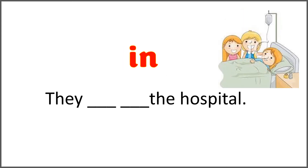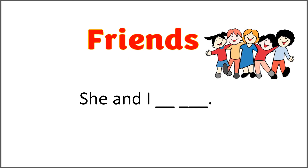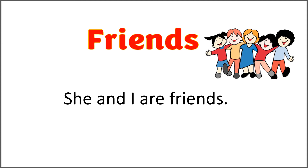The given word is 'in' and the sentence is 'they blank blank the hospital.' Use 'in' with 'are' to complete the sentence. The correct answer is: they are in the hospital. But why are they looking so happy in the hospital? The given word is 'friends.' She and I blank blank blank. Use 'friends' with 'are' to complete the sentence. She and I are friends.